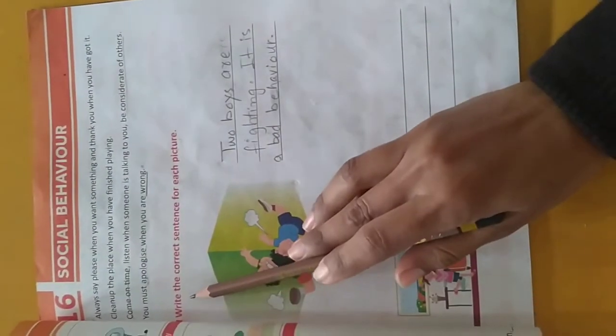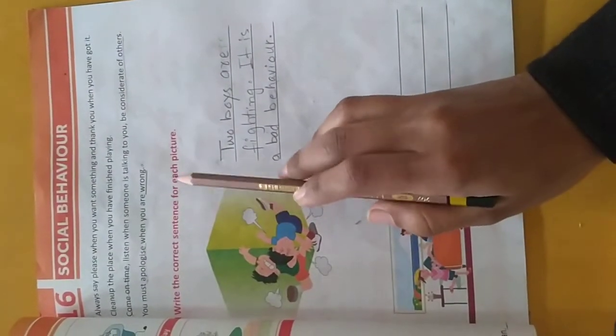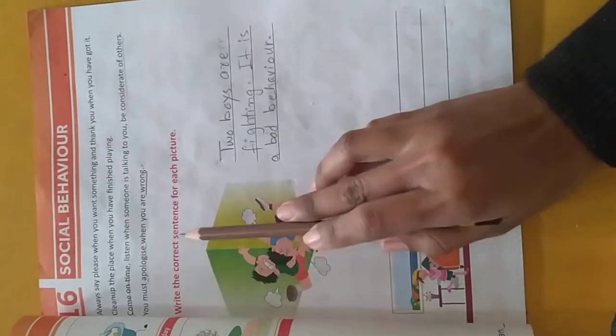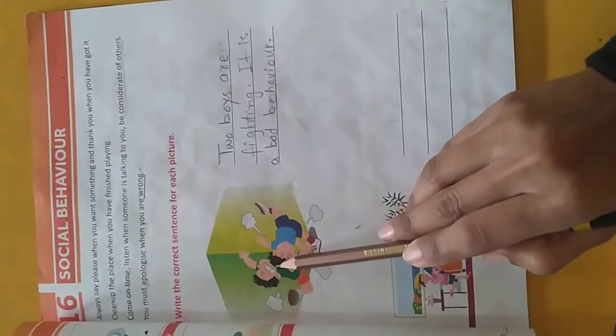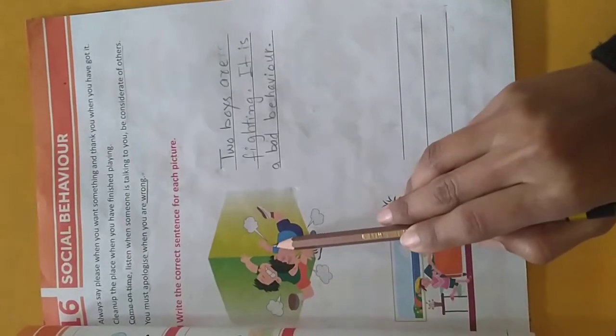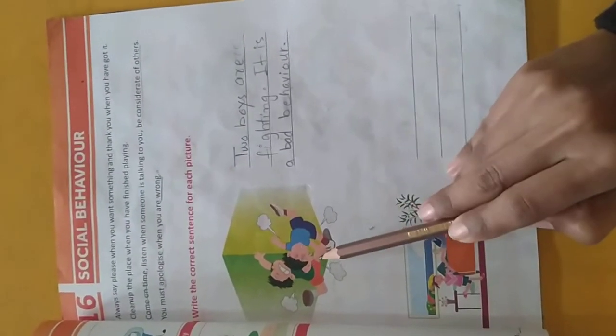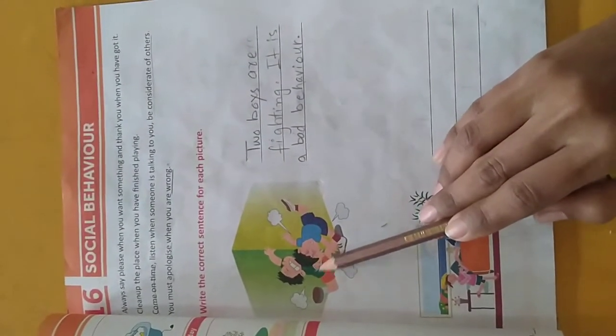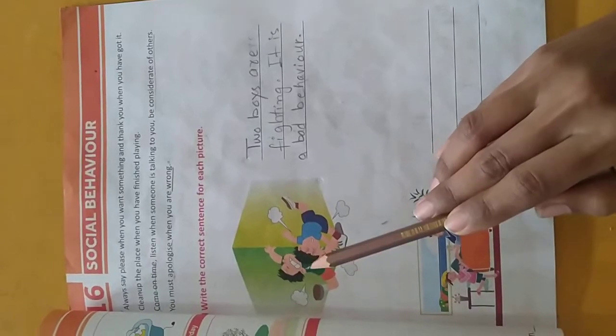In previous lecture, we have learned about behavior. Today, we will do an activity. Write the correct sentence for each picture. They are fighting. It is a bad behavior.